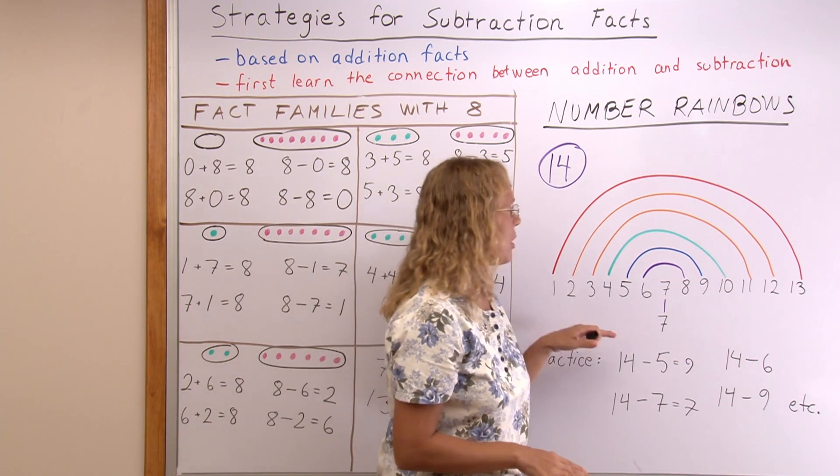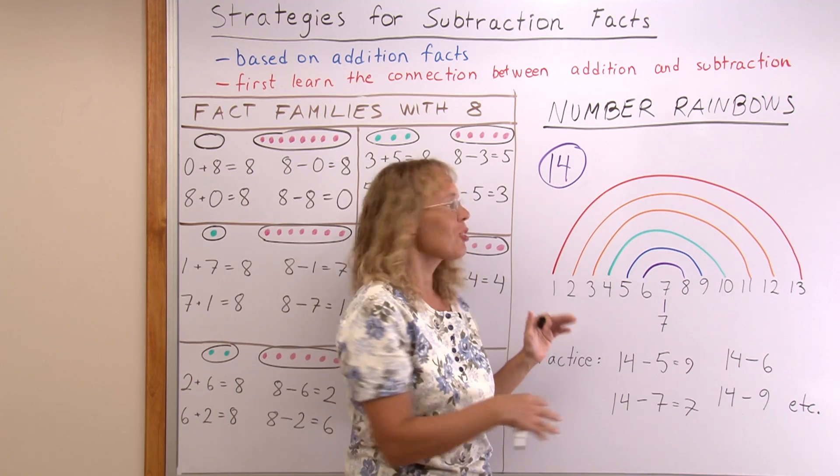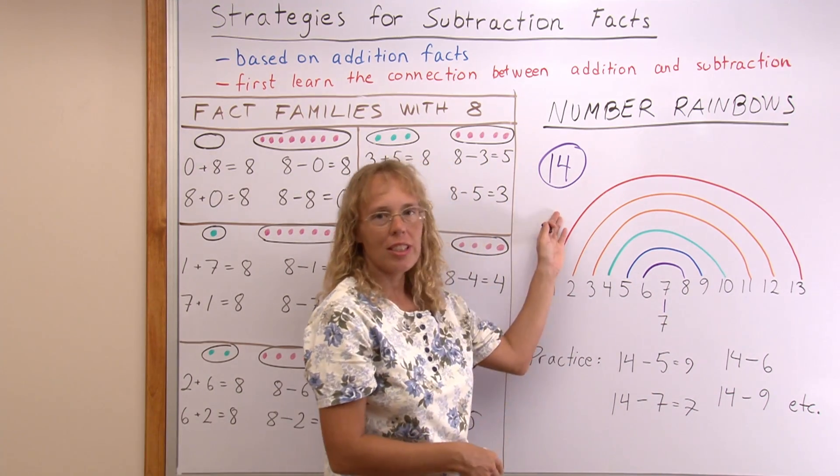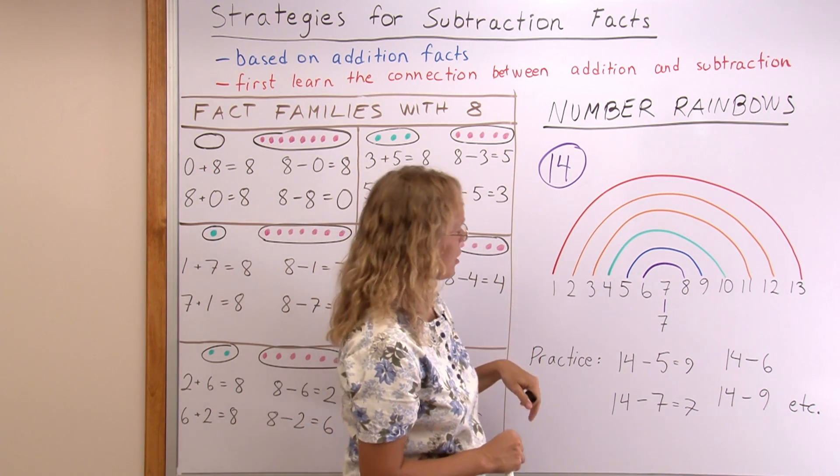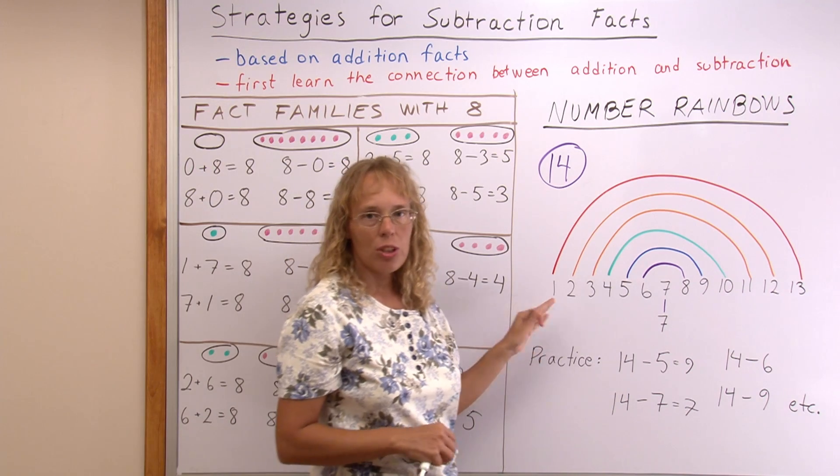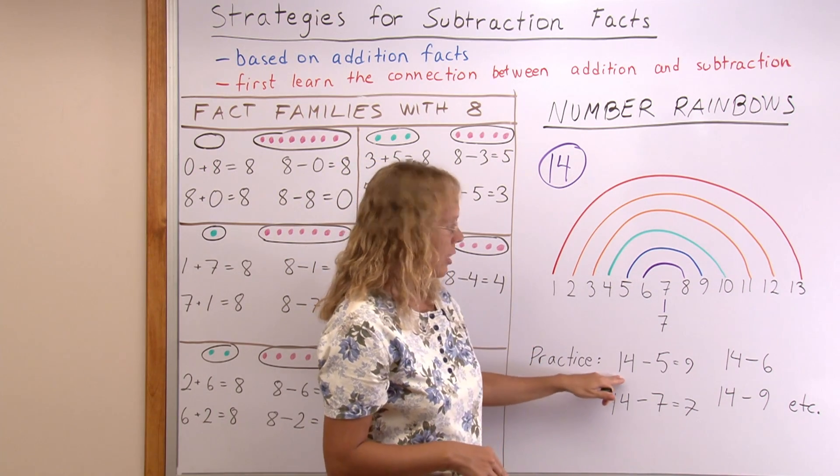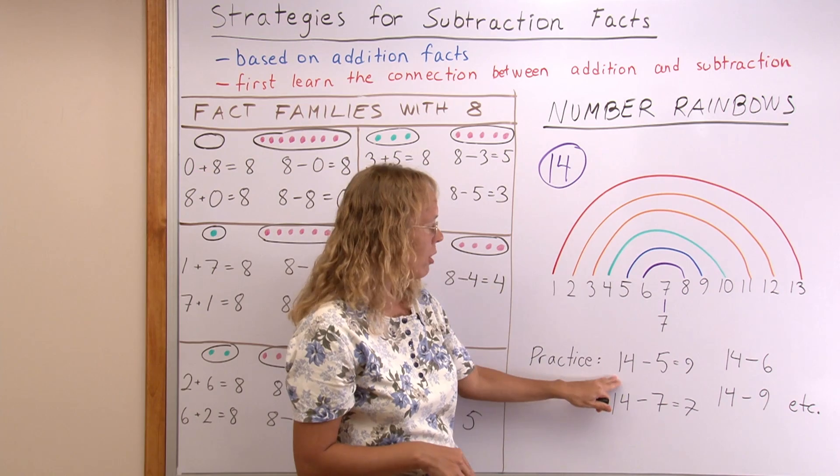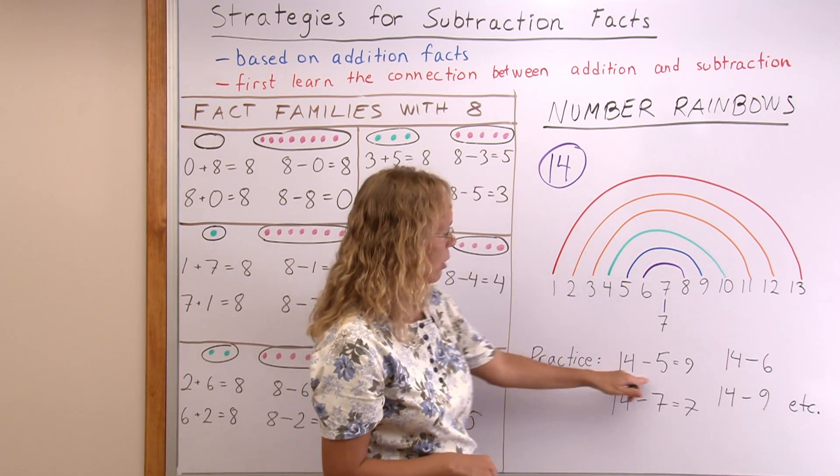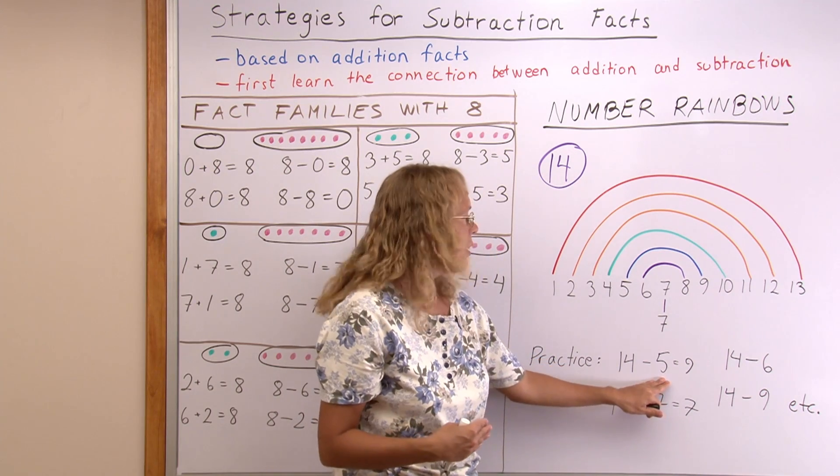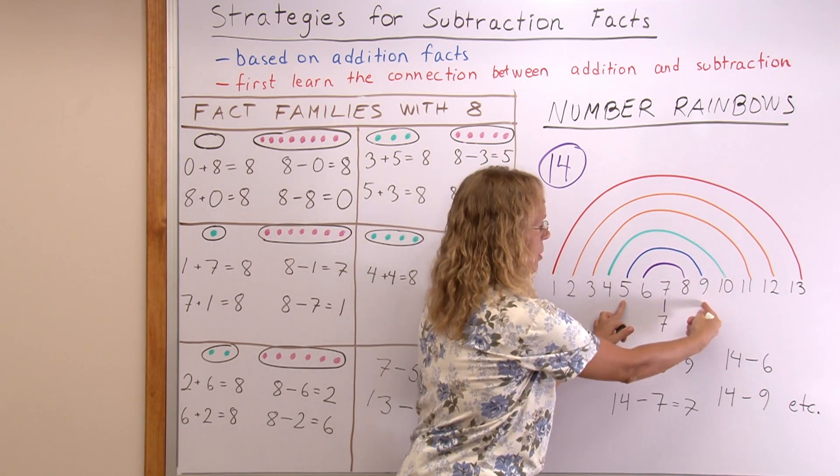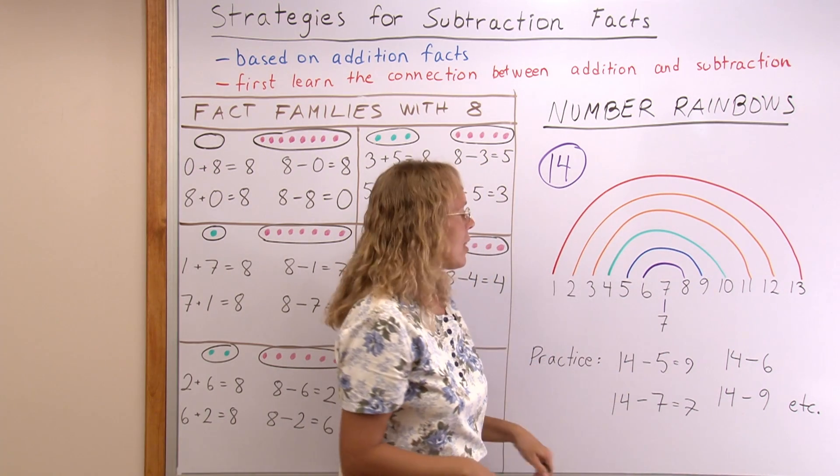And then, of course, you want students to actually make the rainbows. Once you show them how, then let them make the rainbow for 13 and 12 and different numbers. And once it is made, then you can use it to practice subtractions which start with 14. So the total is 14 and you have 14 minus something that you can practice. 14 minus 5, for example—find 5 here in the rainbow and then follow the arc from 5 to this number 9. So the answer is 9. That's how it works.